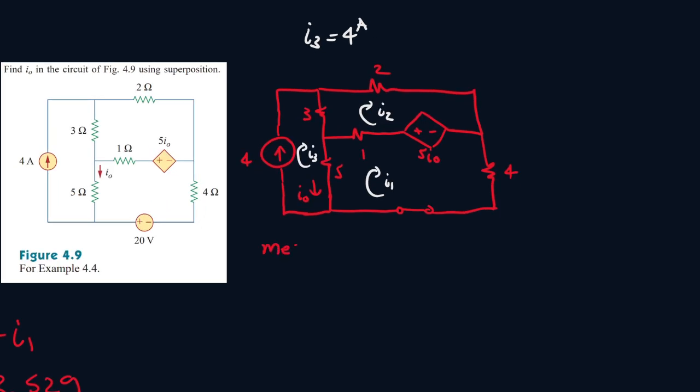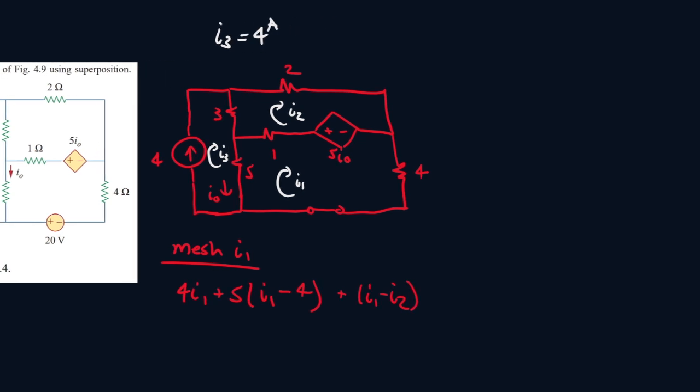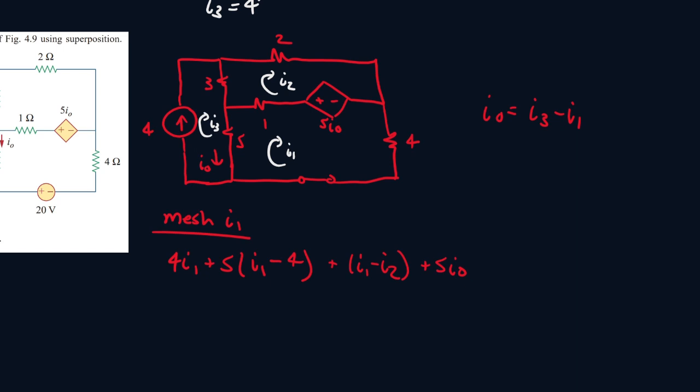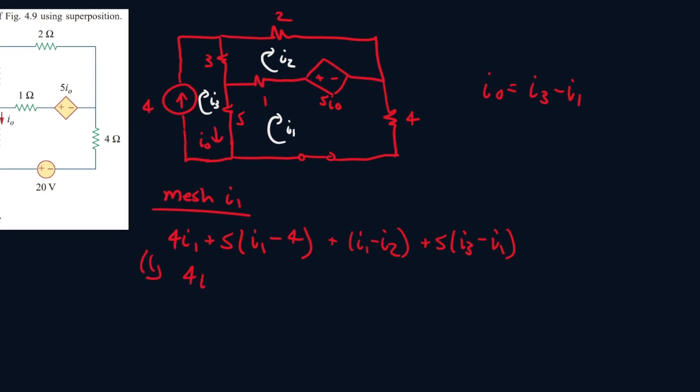and I3 will be equal to 4 amps, because they're both moving in the same direction. Now let's rewrite the equation for mesh I1. So it will be 4I1 plus 5I1 minus I3, and I3 is 4, plus I1 minus I2, plus 5I0. And if we find an equation to represent I0, we see I0 will be equal to I3 minus I1, because I3 is moving in the same direction as I0, and I1 is moving in the opposite direction. So it will be I3 minus I1. Now let's FOIL everything out.